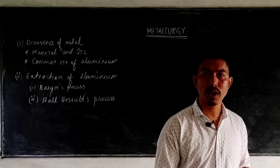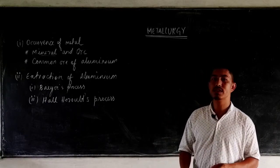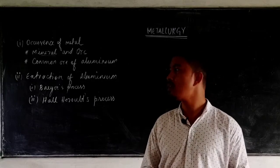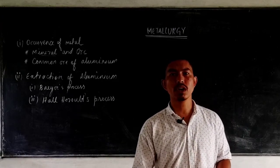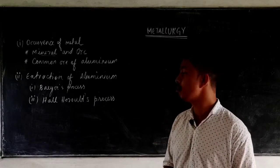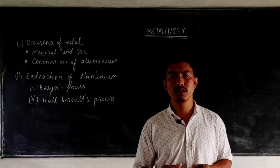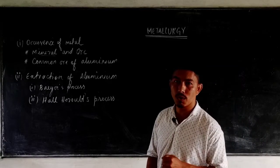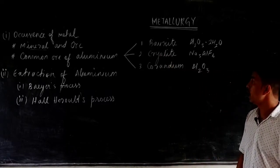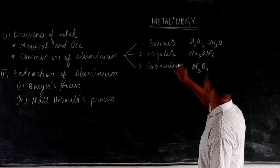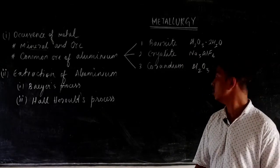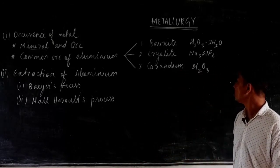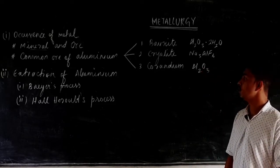Many metals occur in the form of oxides, some in the form of carbonates, some in the form of sulfides. Here we are interested in only the common ores of aluminium, because aluminium is the most widely used metal today — from chocolate foil to making aeroplanes. The three common ores of aluminium are: bauxite (Al₂O₃·2H₂O), cryolite (Na₃AlF₆), and corundum (Al₂O₃).